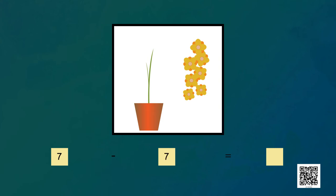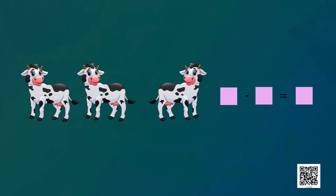Now how many flowers are left in the pot? None. Seven minus seven is equal to zero. So children, first we write the total number, then the minus sign, then the number which has to be subtracted, and it will equal the answer. Here we have three cows and one cow is going away — how many will be left? Two cows are left. Three minus one is equal to two.